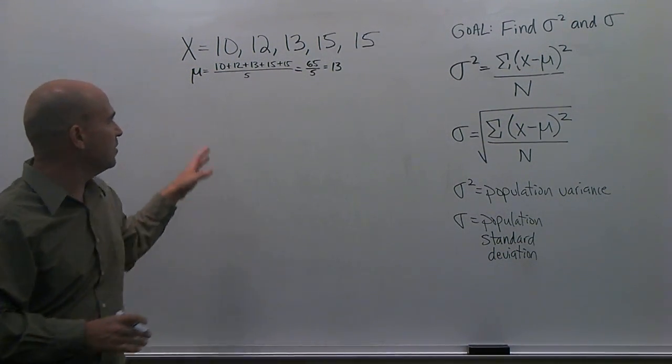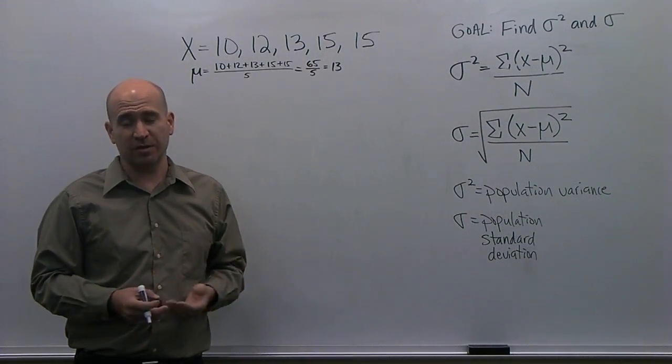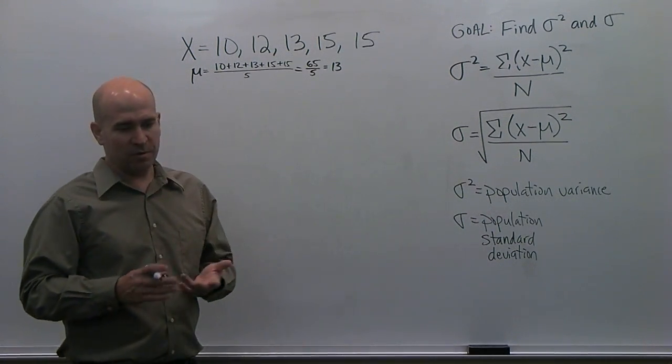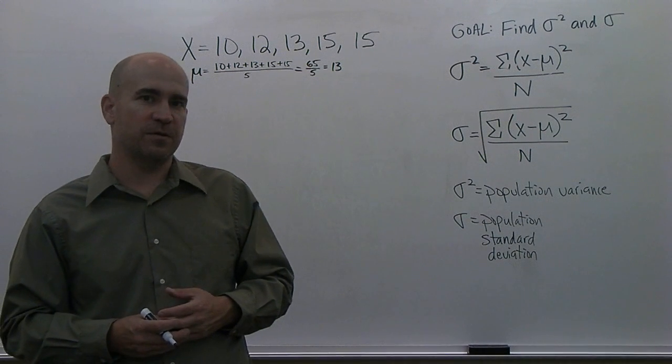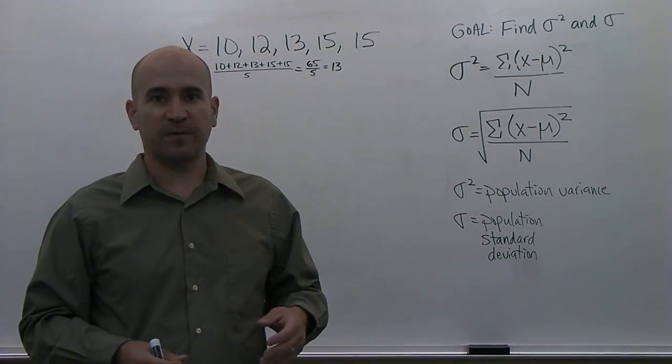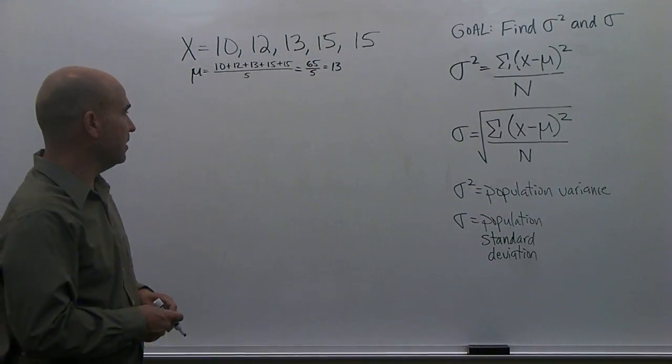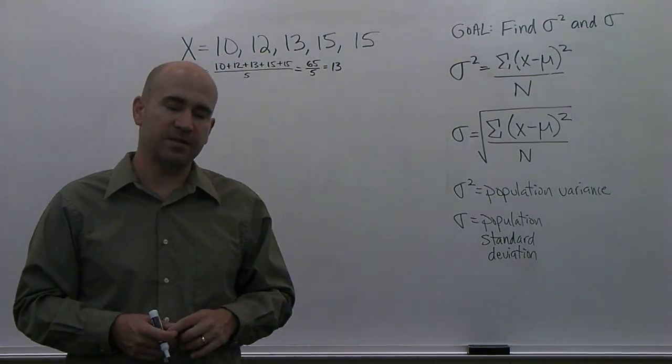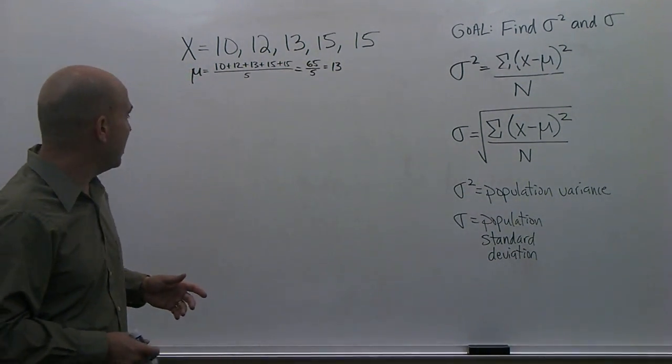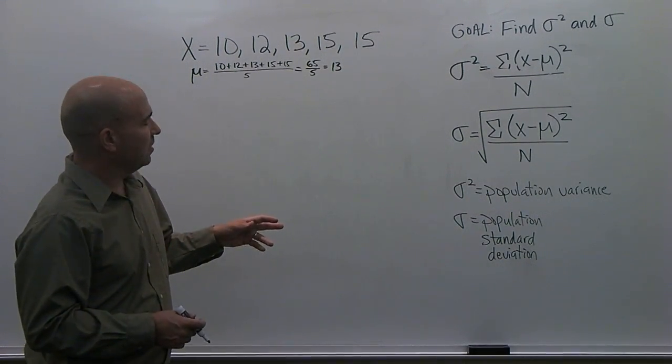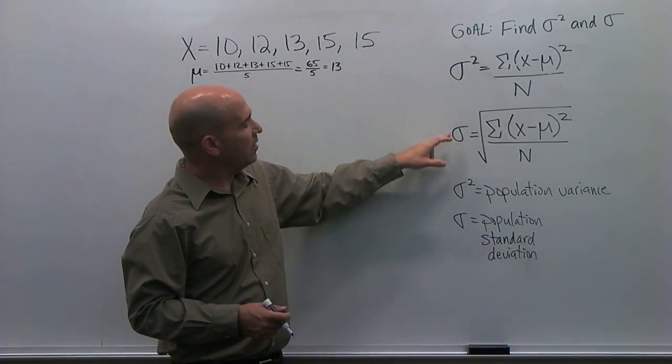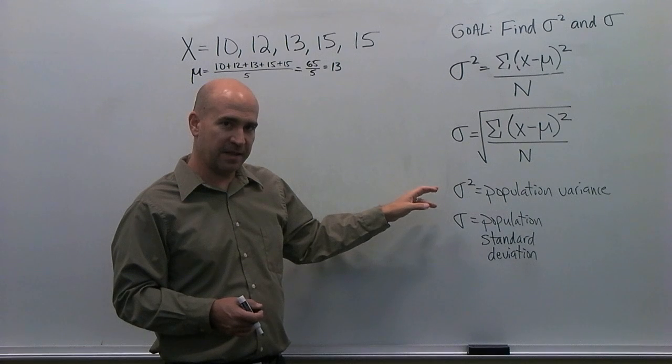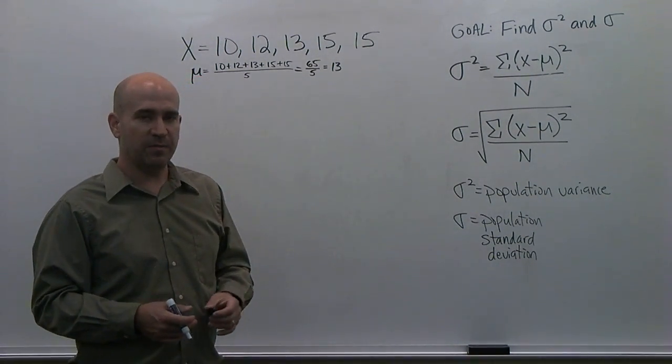Now the reason why I know this is a population is just because I've asserted that. In your own problems, when you're working in your text, it will state solve for the variance for the following values from a population. Or, alternatively, it may say solve for the variance for the following sample of values. And in that case, you're dealing with a sample. Here, we're dealing with a population. And in this video here, I'm only showing you how to solve for population variance and population standard deviation, not the sample variance and sample standard deviation.